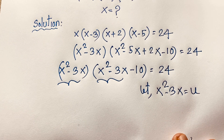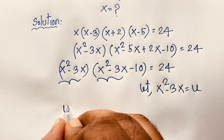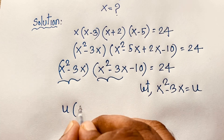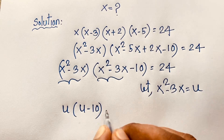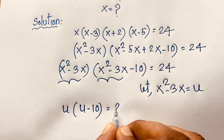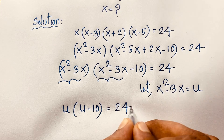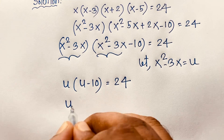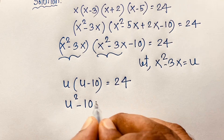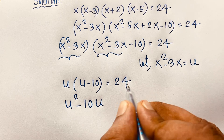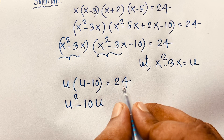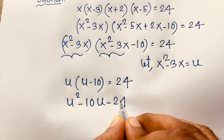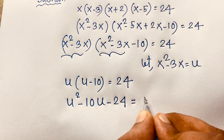Then here, u times (u minus 10) is equal to 24. Expanding, we get u squared minus 10u, and moving 24 to this side, it will be negative 24.